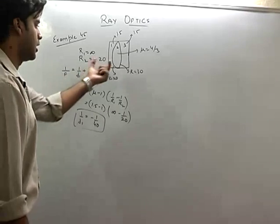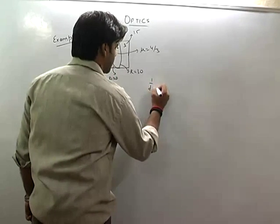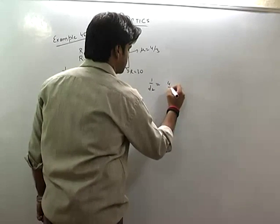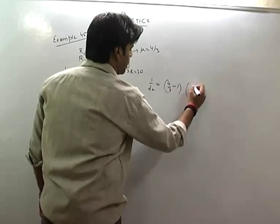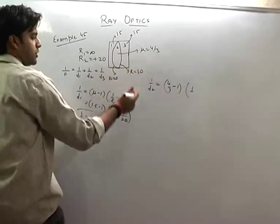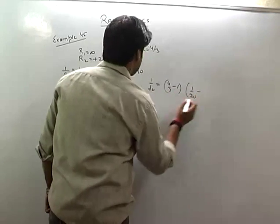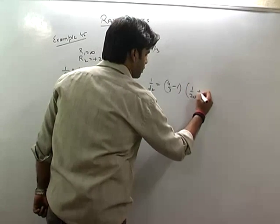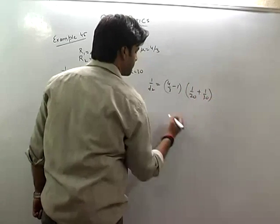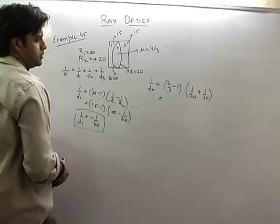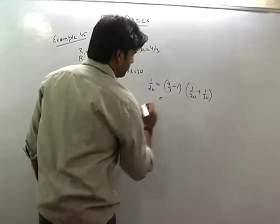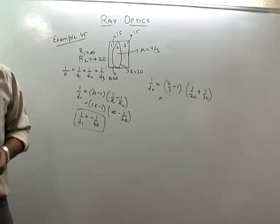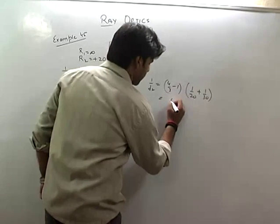Similarly, for the water lens, 1/f2 = (mu - 1) × (1/r1 - 1/r2). Here mu is 4/3, so (4/3 - 1) = 1/3. r1 is +20 and r2 is -30. So 1/f2 = (1/3) × (1/20 - 1/(-30)) = (1/3) × (1/20 + 1/30). This comes out to be 5/180.